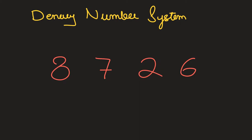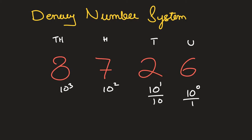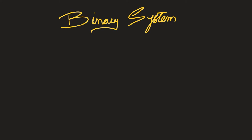How do we know what to call this number? In the back of our mind, we know this is the units place, this is tens, hundreds, and thousands. But how did we conclude that? It is basically base to the power of the position of that value. So this becomes 1, 10, 100, and 1000.